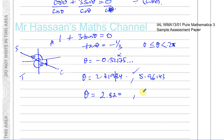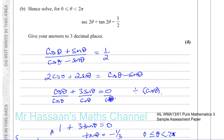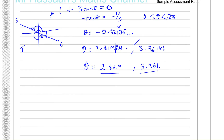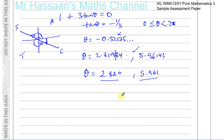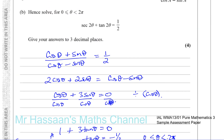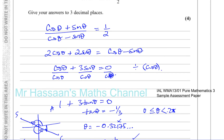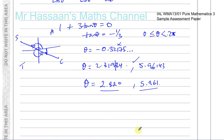Those are the two solutions to the equation between 0 and 2π to three decimal places. That's the answer to question number 9.